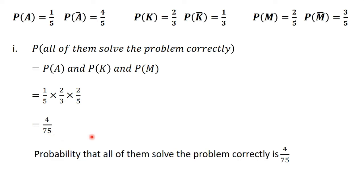So the probability that all of them solve the problem correctly is 4/75. The second part of the question asks us to find the probability that none of them solve the problem correctly. We are going to do that in the next video, so we'll see you there. Bye bye.